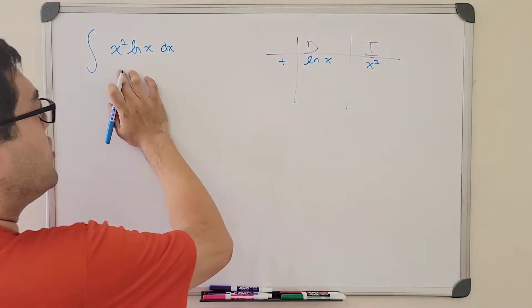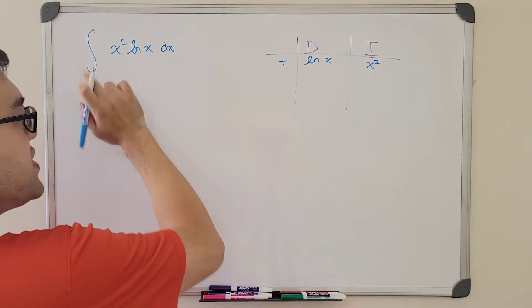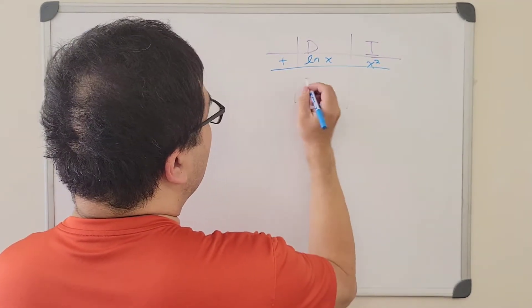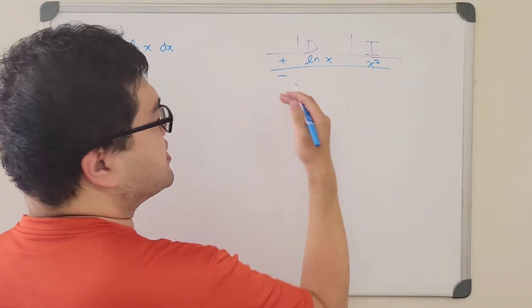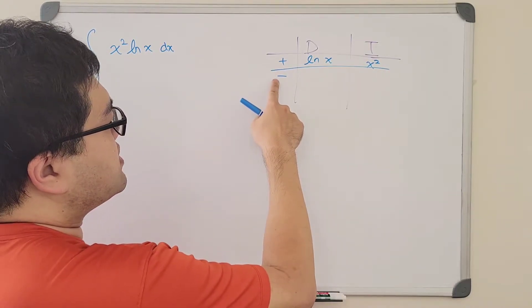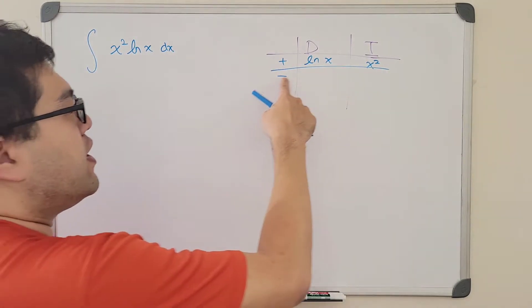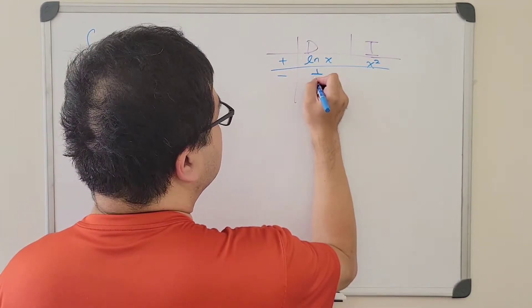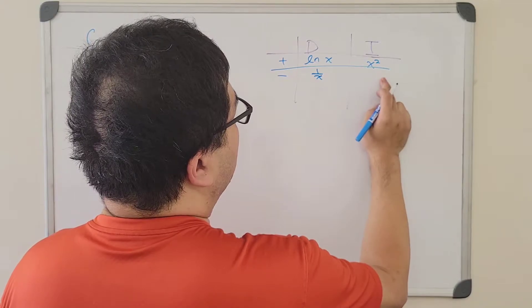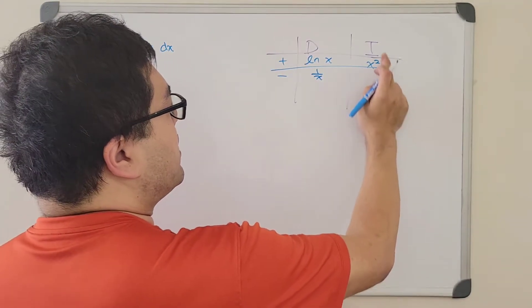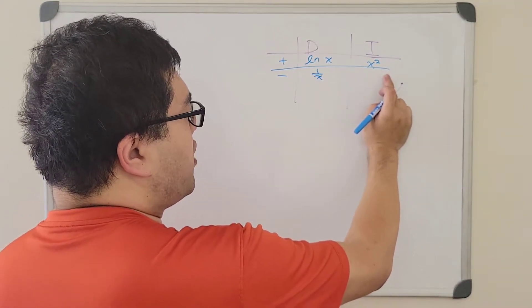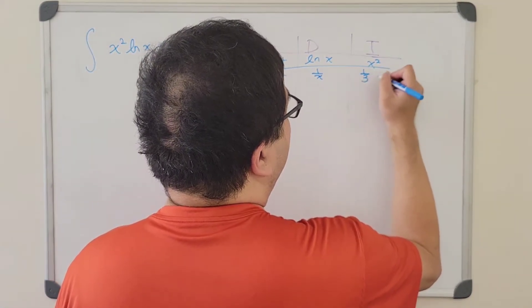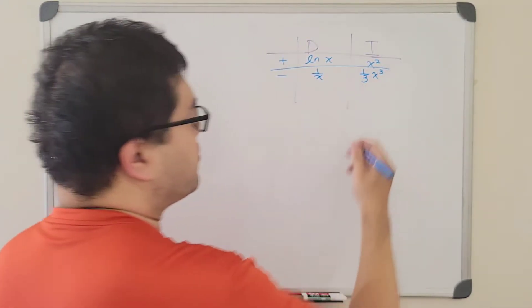At this moment, we have a positive sign in front. In this method, we're going to alternate the sign every step, so the next step will turn into negative. The derivative of ln of x is 1 over x. And for the x squared part, we're going to take the integral of it, which is 1 third times x to the third power.